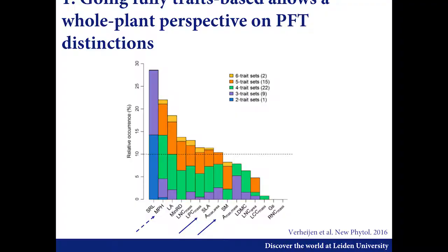As a subsequent analysis, we asked: if we want to make predictions of PFTs, which combinations of traits would we ideally want to use? This is the same kind of thing as asking about plant strategies, but from a slightly different angle.